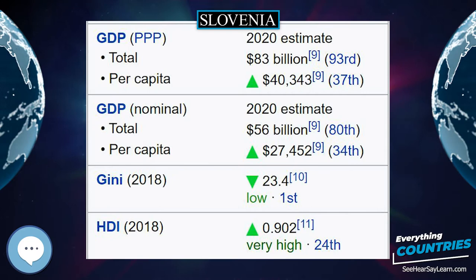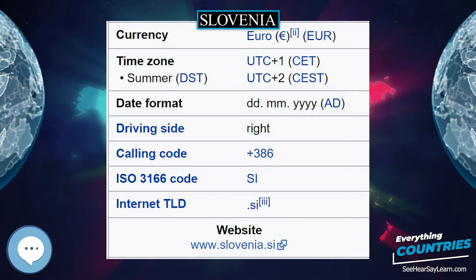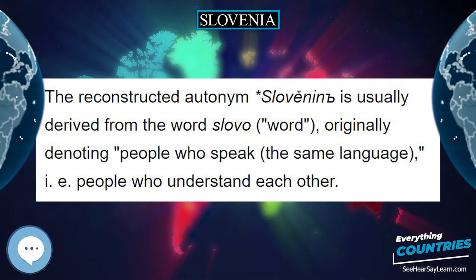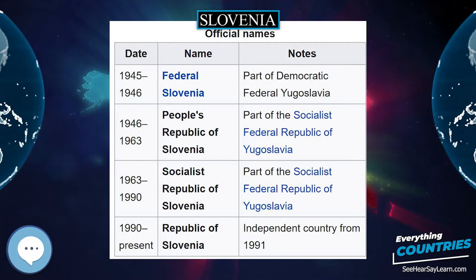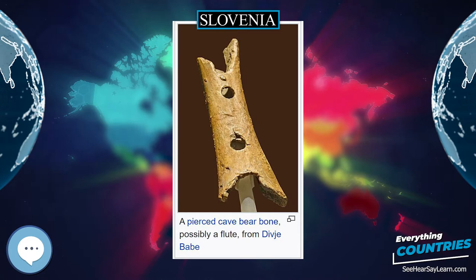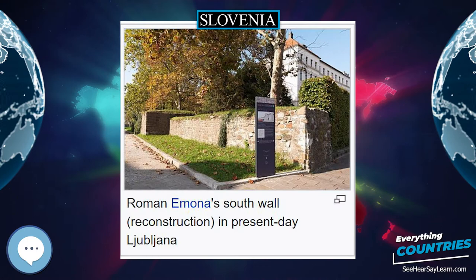Slovenia has a mostly mountainous terrain with a mainly continental climate, with the exception of the Slovene Littoral which has a sub-Mediterranean climate, and the northwest which has an alpine climate. The Dinaric Alps and the Pannonian Plain meet on the territory of Slovenia. The country, marked by significant biological diversity, is one of the most water-rich in Europe, with a dense river network, a rich aquifer system, and significant karst underground water courses. Over half of the territory is covered by forest.